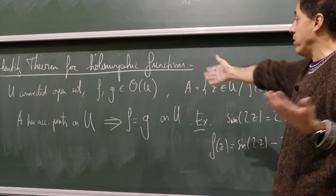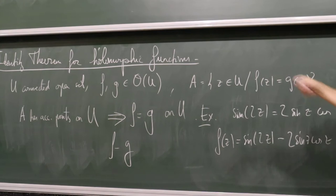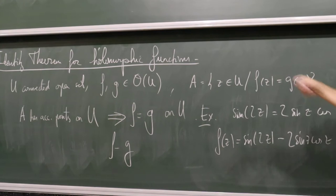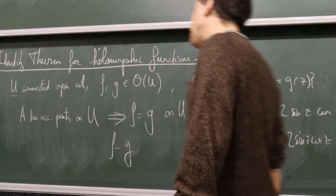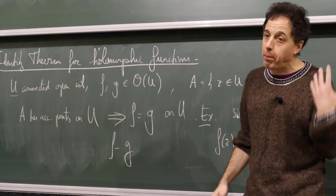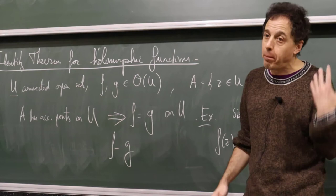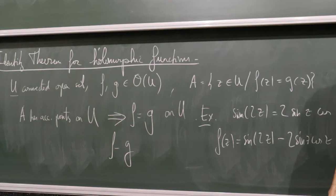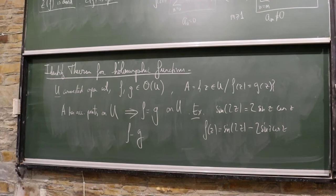The proof of the identity theorem is immediate: consider F − G; its set of zeros A has an accumulation point, so by the previous result, F − G is identically zero. This can also be applied when U is not connected, in which case you derive the result on each connected component where you have an accumulation point of zeros.